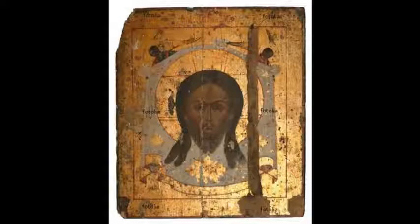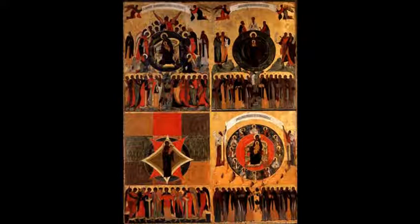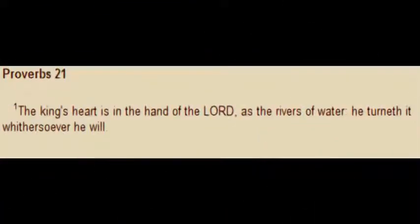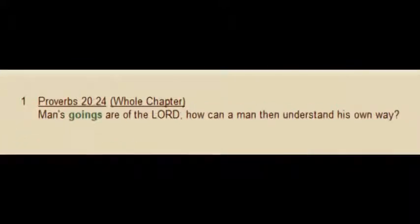Now, why did that happen? The Most High is behind that. Before we get into these two books, I just want to read two quick scriptures. The first is Proverbs chapter 21, verse 1: 'The king's heart is in the hands of the Most High — as the rivers of water, he turneth it whithersoever he will.' So the Most High causes the king to do his bidding. The second scripture is Proverbs chapter 20, verse 24: 'Man's goings are of the Lord. How can a man then understand his own way?' Those two scriptures give us insight into why the Most High had these guys build these cathedrals and have these black icons painted.